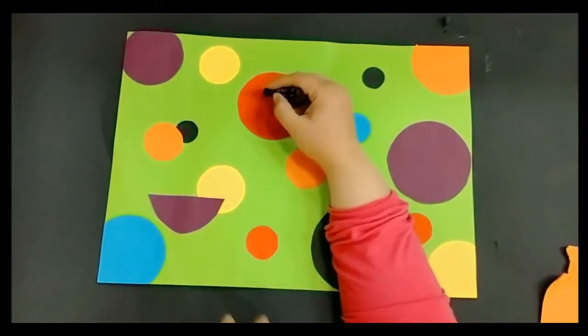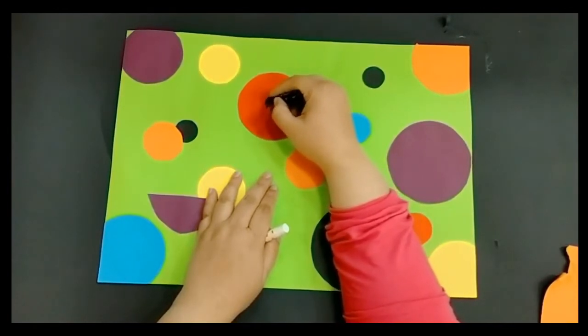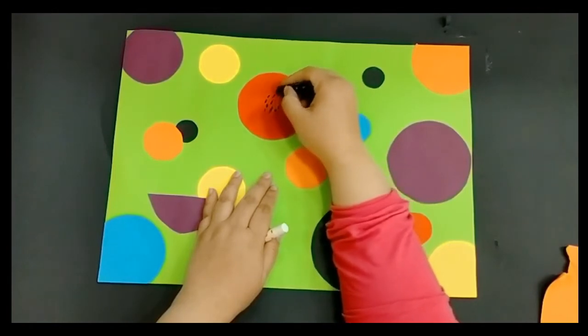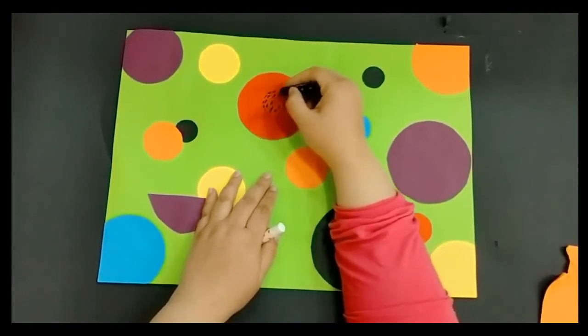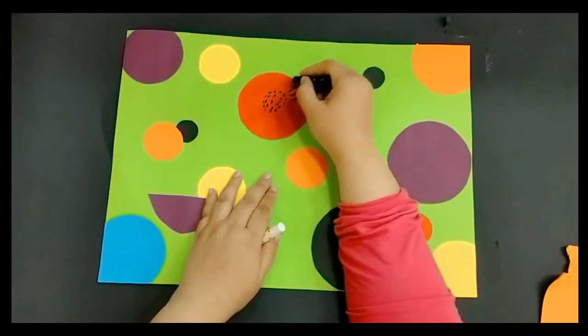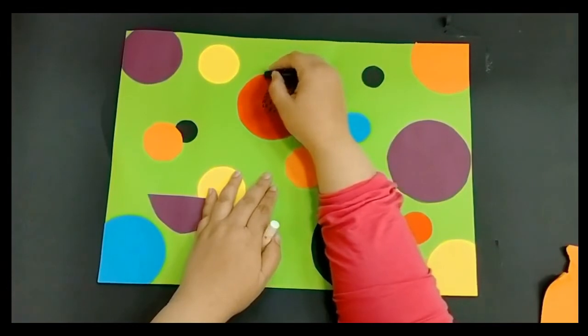Use white and black oil pastels or crayons or markers to add details to the flowers. Avoid using white on light colors and black on dark colors to help enhance the contrast. Start in the middle of each flower shape and make a center of dots.